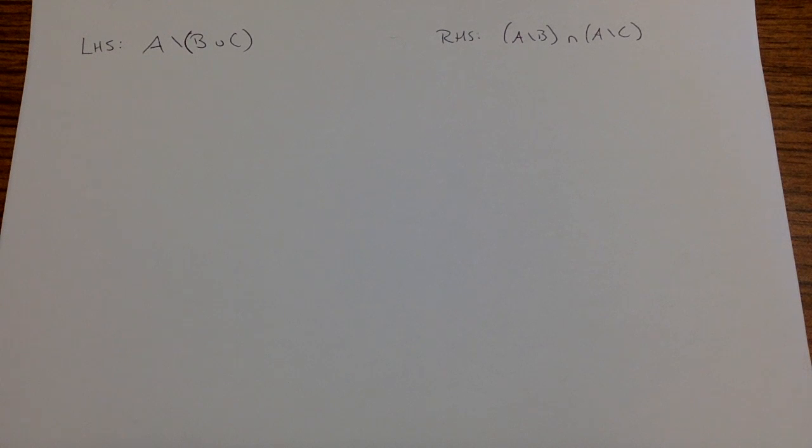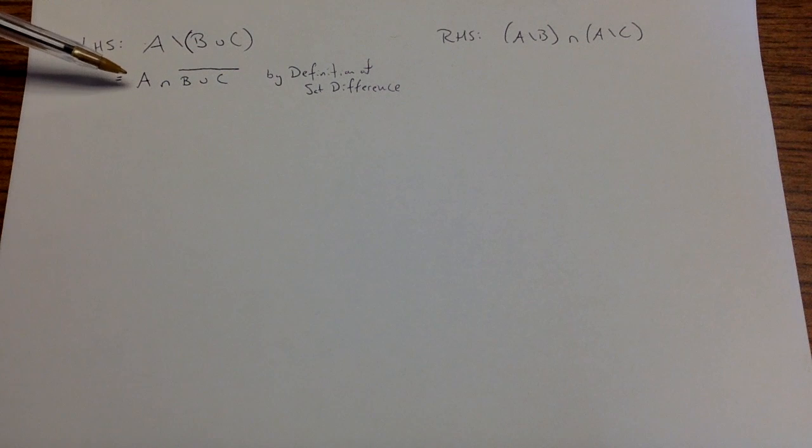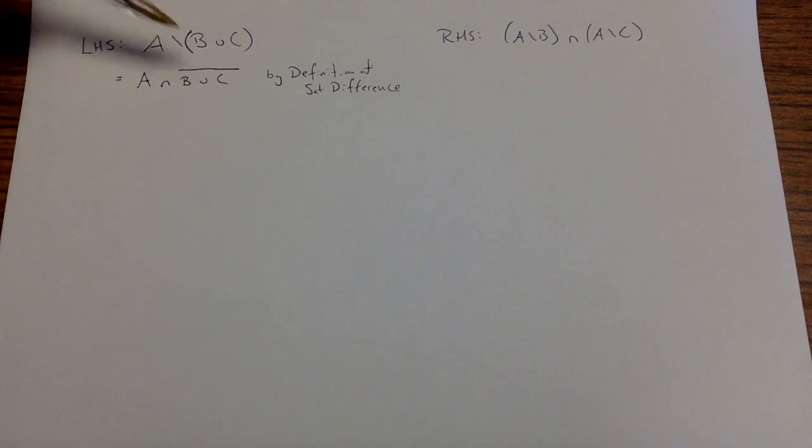I'm going to follow my process and first I'm going to start on the left-hand side. First I'm going to see I have a set difference here, so I'm going to remove this by replacing it with the definition. So I know that these two things are equal because that's just what the definition of set difference is doing. But now I see I have a complement that's above a union, so I'm going to use DeMorgan's Law to move that further down.